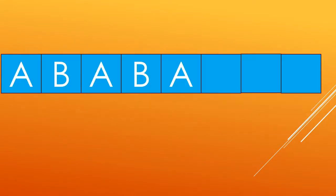We can find patterns in letters too. Observe the given pattern and write the next three letters. We can see that letter A and letter B are placed alternatively — this becomes our pattern. So the next letter will be B, then again A, then again B.